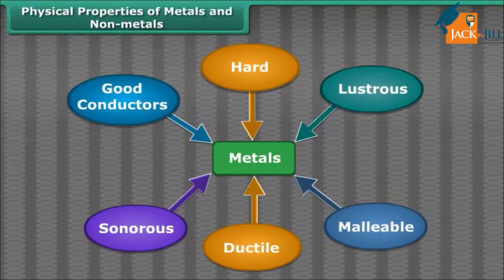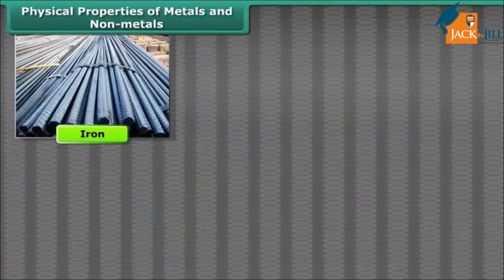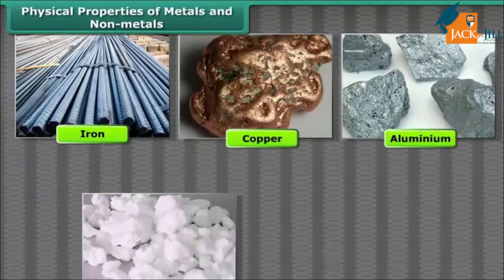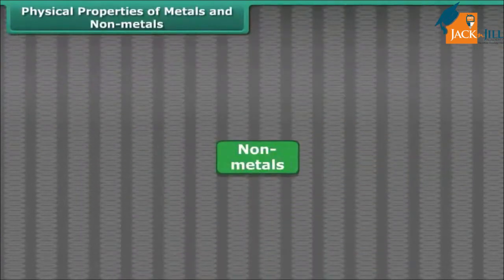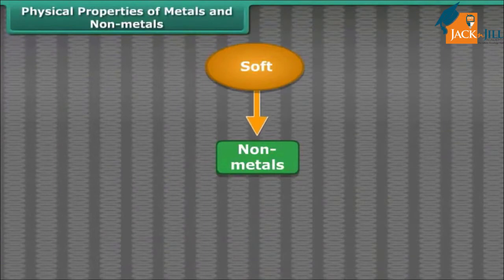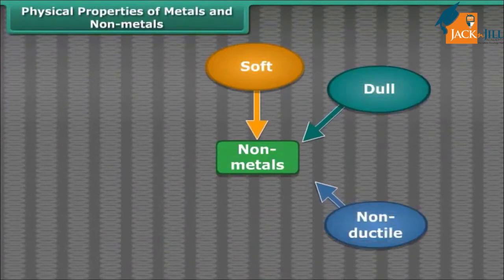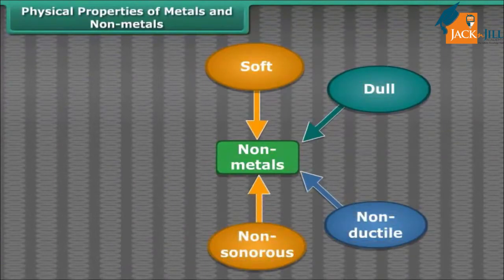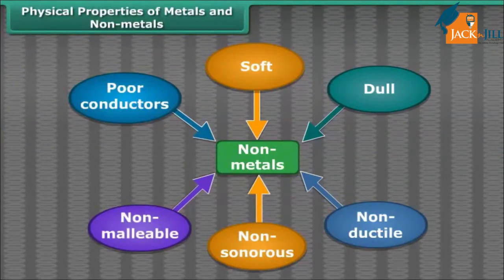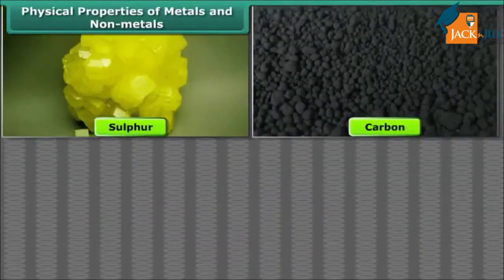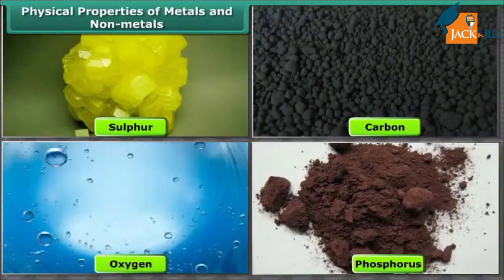So friends, by these properties we can say that metals are hard, lustrous, malleable, ductile, sonorous, and good conductors of heat and electricity. Iron, copper, aluminium, calcium, magnesium etc. are examples of metals. Non-metals like coal and sulfur are soft, dull, non-ductile, non-sonorous, non-malleable, and poor conductors of heat and electricity. Sulfur, carbon, oxygen, phosphorus etc. are examples of non-metals.